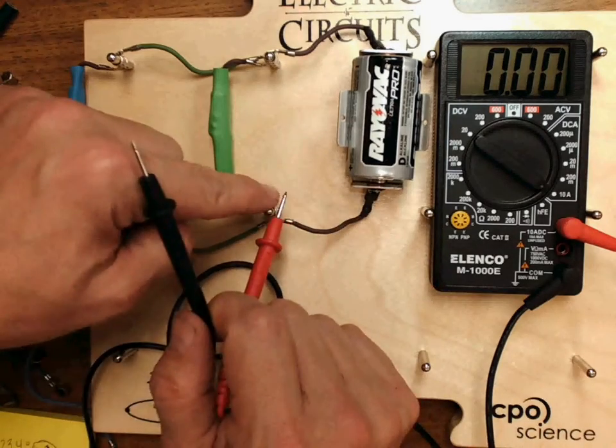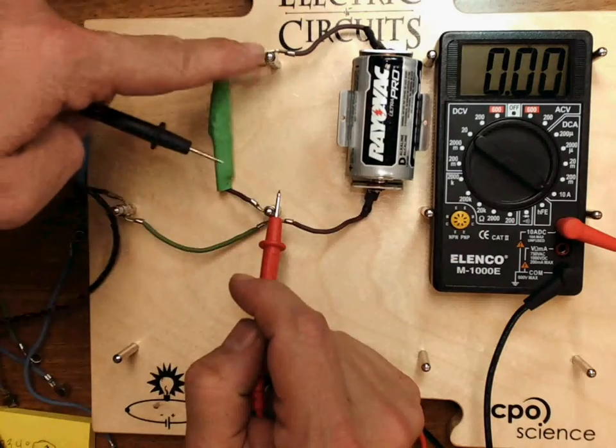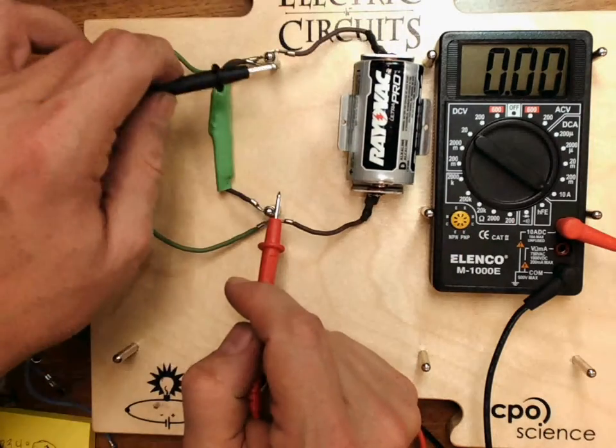It's going into my meter right here and then it goes through the meter and then it comes back here straight into the battery. So this is a short circuit.